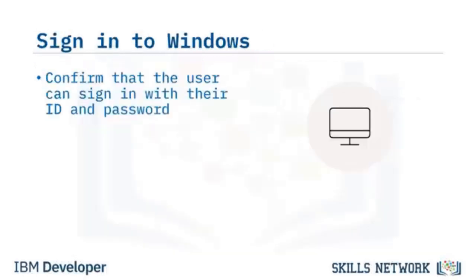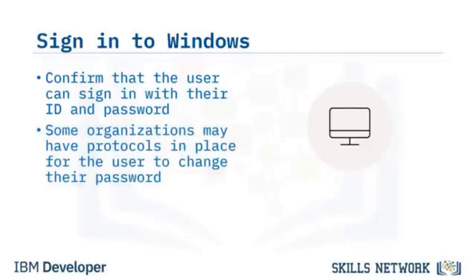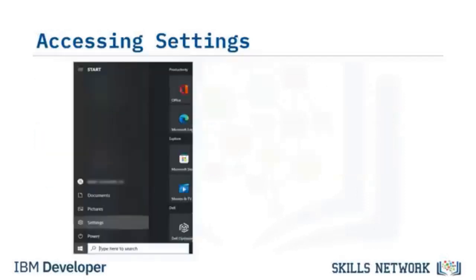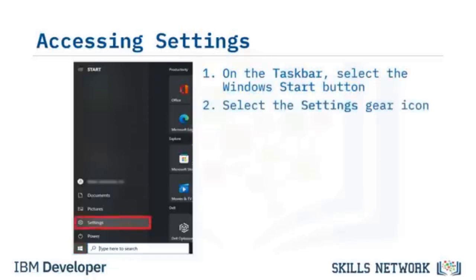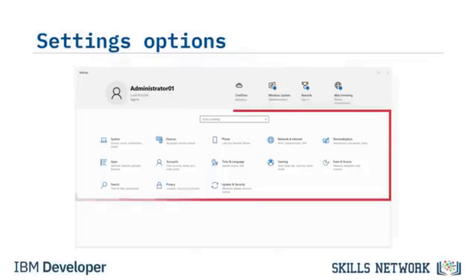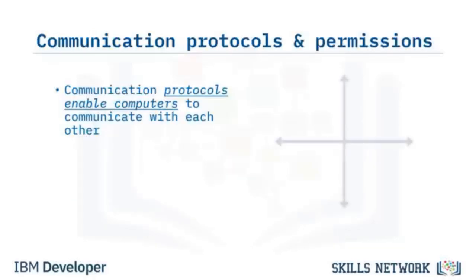You'll want to show your user how to sign into their machine using their ID, password, or PIN. Some organizations may have protocols for the user to change their password. As an IT support person, you may use the Settings app — a central location for many Windows configuration and management tasks — to personalize and customize the computer. One of the fastest ways to access Settings is to select the Windows Start button and select the gear icon. Communication protocols enable computers to communicate with each other, including internet communications and document sharing. Standard protocols include HTTP, TCP, UDP, IRC, and communication permissions.